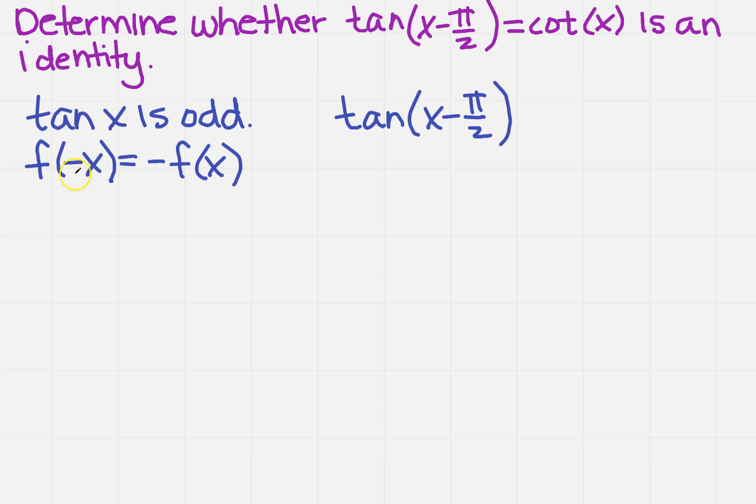I know that if I plug in negative x everywhere there is an x, it's going to give me the opposite of this function. So what is the opposite? Well, that's going to be minus tangent. If I do the opposite, basically you turn around the inside. So you get pi over 2 minus x.